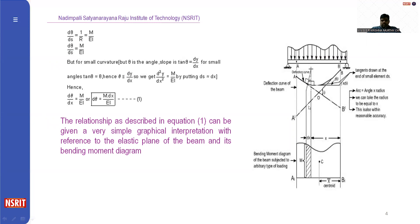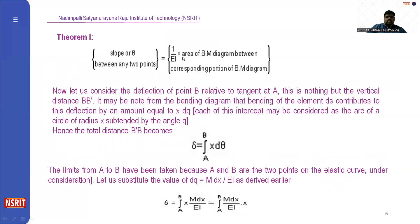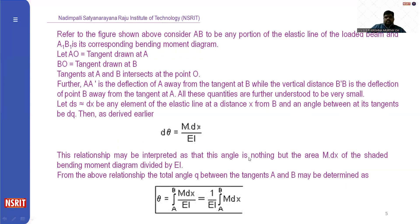Taking a point O and drawing tangents from A and B, both tangents intersect at point O. We know that d(theta) = M dx / EI. Integrating with respect to x, the integral from A to B of M dx/EI gives the First Theorem: the slope or difference in theta between any two points equals (1/EI) times the area of the bending moment diagram between those points.